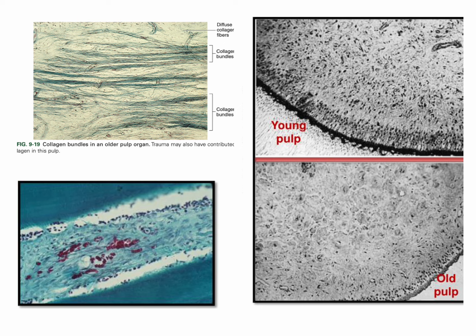As you can see in the histological section, this is a young pulp with a lot of nuclei representing a lot of cellular components, mostly fibroblasts. In the old pulp, there are much fewer cells and much more extracellular matrix of collagen fibers. The cellularity decreases, the number of capillaries and blood supply decreases, the nerve tissue decreases, and a lot of collagen bundles start to form instead of the loose connective tissue filled with gel matrix.